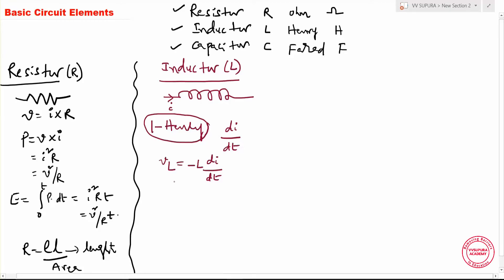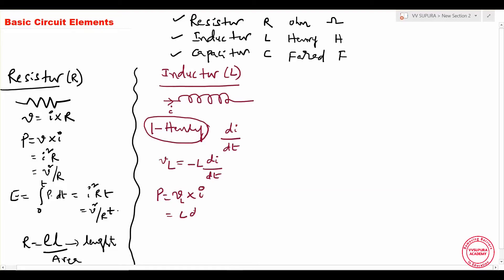The induced EMF across the inductor is equal to L di/dt. To calculate the power: P is equal to voltage multiplied with current, so it equals VL multiplied by i, which gives L i di/dt. To calculate stored energy: E is equal to the integral from 0 to t of power multiplied with dt. From this, the energy stored in the inductor is one-half L I squared.